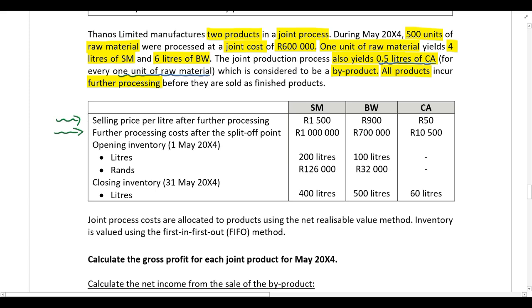We are given opening inventory at the beginning of May in liters and in Rands, and closing inventory at the end of May in liters. In this example, production does not equal sales because we have opening and closing inventory. We already know the liters produced, and we know opening and closing inventory, so we can calculate the number of liters sold.